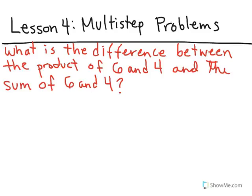Let's take a look at this first problem: What is the difference between the product of six and four, and the sum of six and four? In this problem we see the words difference, product, and sum. We first look for phrases such as 'the product of six and four.' We will rewrite the question emphasizing these phrases, and for each phrase we find one number.